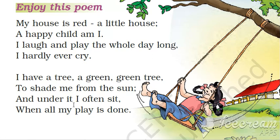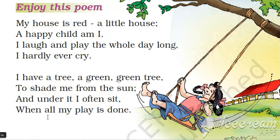And under it I often sit when all my play is done. Under means neeche — jaise ki aap is picture mein bhi dekh sakte hain, yeh jo bachchi hai yeh us ped ke neeche jhool rahi hai. Under it — uske neeche, I often sit — often means mein bahut baar us ped ke neeche baith jaati hoon. When all my play is done — jab poora khel karke main thak jaati hoon aur mera khel khatam ho jaata hai, tab main ped ke neeche baith jaati hoon.